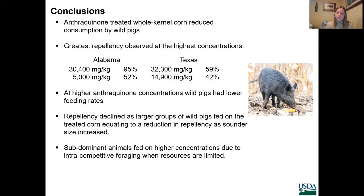In conclusion, anthraquinone-treated corn reduced consumption of whole corn by wild pigs. The greatest repellency was observed at the highest concentration, approximately 3% anthraquinone. In Alabama, actual residues of 30,400 mg/kg anthraquinone resulted in 95% repellency. In Texas, 32,300 mg/kg anthraquinone resulted in 59% repellency. In Alabama, 5,000 mg/kg anthraquinone resulted in 52% repellency, while in Texas actual residues of 14,900 mg/kg anthraquinone resulted in 42% repellency. Trends in repellency were also observed in the rate that wild pigs spent feeding, with greater anthraquinone concentrations corresponding to lower rates of feeding. Repellency declined as larger groups of wild pigs fed on the treated corn, equating to a reduction in repellency as sounder size increased.